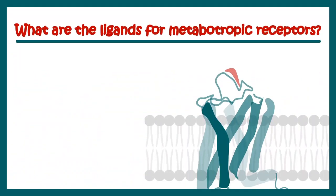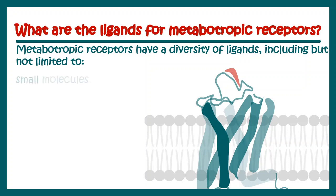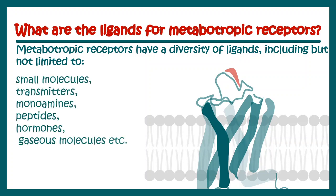So let's try to understand what the ligands for metabotropic receptors are. Metabotropic receptors can have a large variety of ligands — small molecules, transmitters, monoamines, peptides, hormones, and even gaseous molecules. We can try to understand the mechanism of action by taking some live examples.